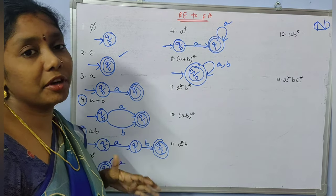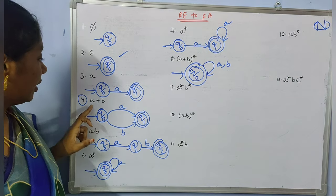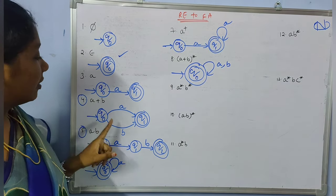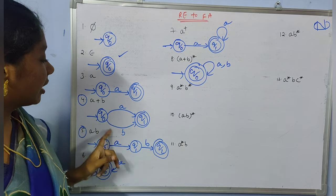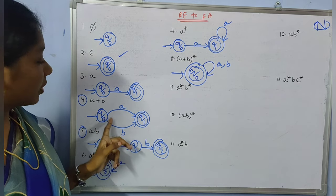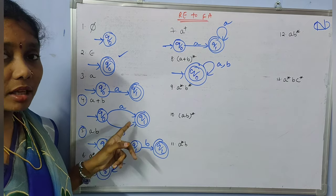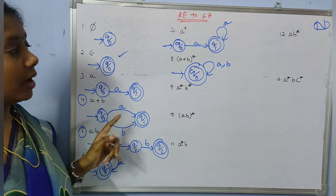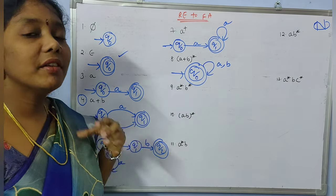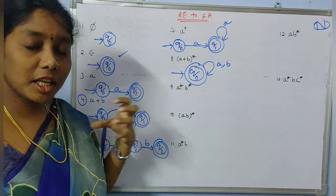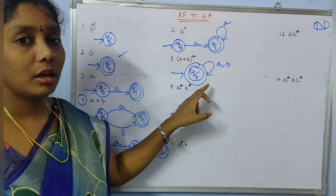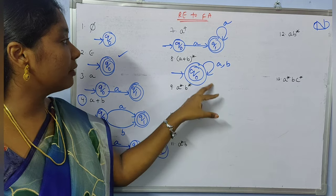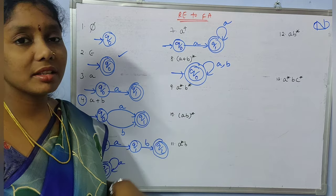In example 8, 'a' and 'b' can be repeated any number of times including epsilon, so the initial state is also the final state. Whereas in example 7 we need at least one 'a' or at least one 'b', which is why a transition is taken instead of a self-loop. That is the difference between the two.